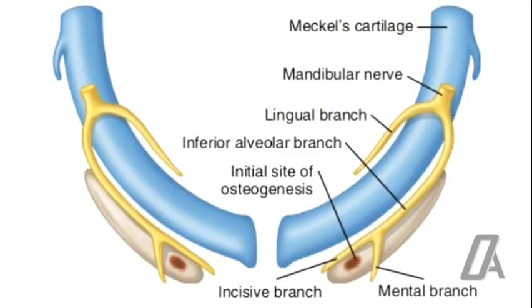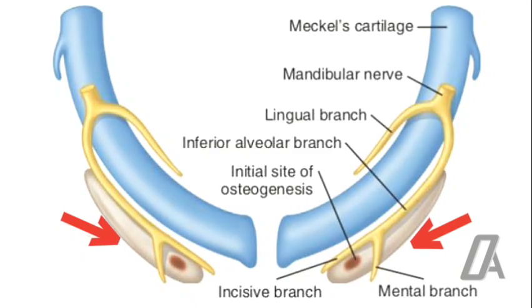But the role of the Meckel's cartilages doesn't stop there. They act as a guide, directing the formation of the bone around them. As the bone continues to grow and solidify, the cartilages eventually disintegrate, leaving behind the newly formed mandible.